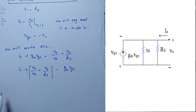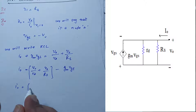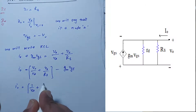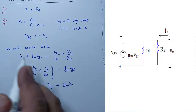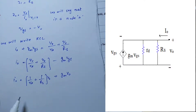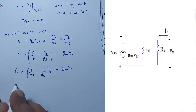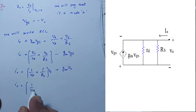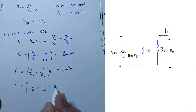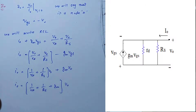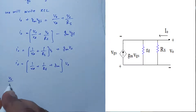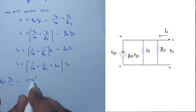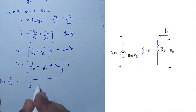We have V_not over Rd, V_not over Rs, and minus gm times VGS. Substituting VGS equals minus V_not, we get gm times V_not. Bringing all V_not terms to one side, we get: V_not times (1/Rd + 1/Rs + gm) equals V_not.